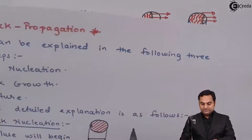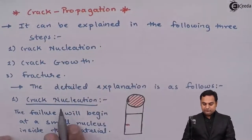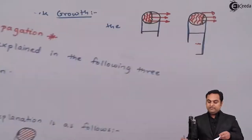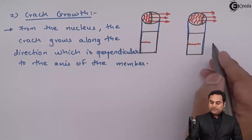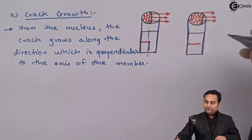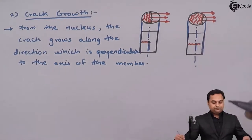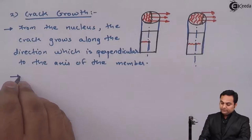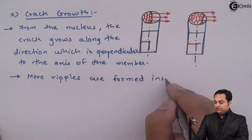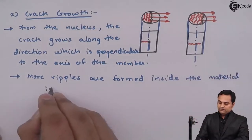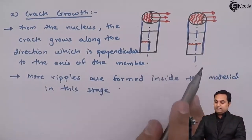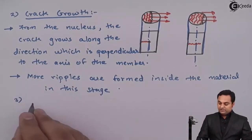From this small hole, when the load is applied externally, failure will start from the nucleus and the crack will go on progressing in a direction perpendicular to the axis of the member. During crack growth, more ripples or bubbles are formed inside the material, and more cracks are developed internally.